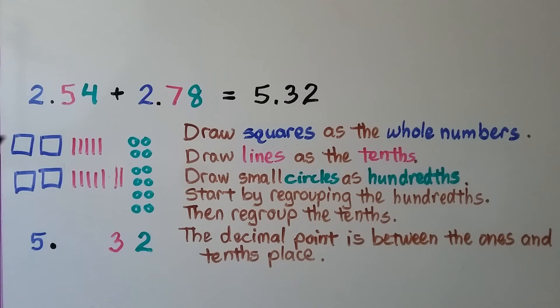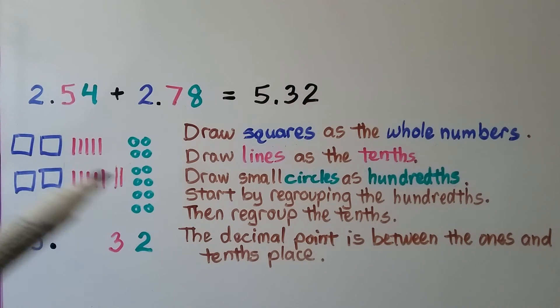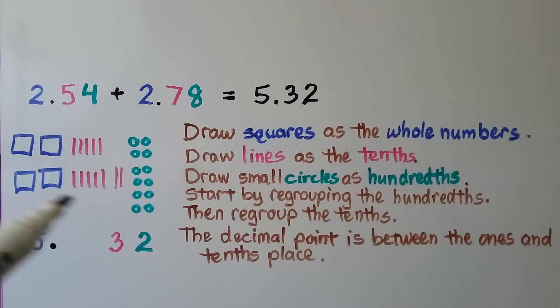Here we have 2 and 54 hundredths plus 2 and 78 hundredths. We draw our 2 and 54 hundredths by drawing 2 squares for the 2 whole, 5 lines for the 5 tenths, and 4 little circles for the 4 hundredths. We draw 2 squares for the 2 whole here, 7 lines for the 7 tenths, and 8 little circles for the 8 hundredths.